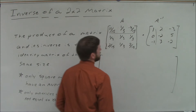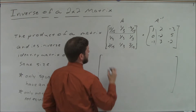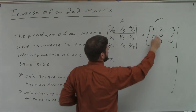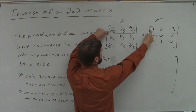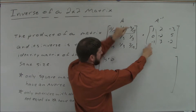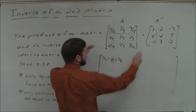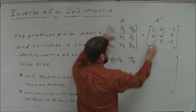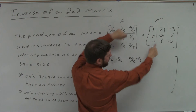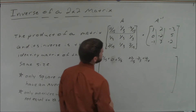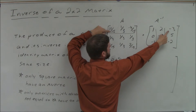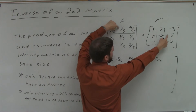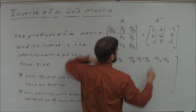A quick review — rows by columns. For row 1, column 1: 11/15 times 1, plus 1/3 times 0, plus negative 4/15 times negative 1. For column 2: 11/15 times 2, plus 1/3 times negative 2, plus negative 4/15 times 3. For column 3: negative 33/15, plus 5/3, plus 8/15.